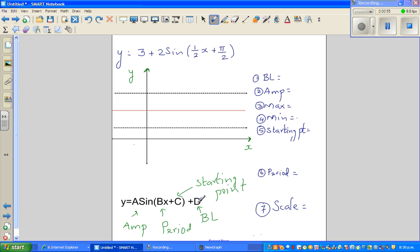Let's start. The baseline is 3 when you compare this formula. The amplitude is the coefficient of sine, which is 2. The maximum is baseline plus amplitude, so 3 plus 2 which is 5. The minimum is baseline minus amplitude, which is 3 minus 2 equals 1.